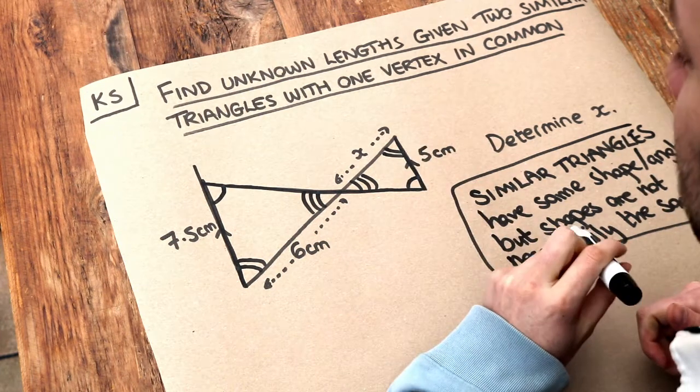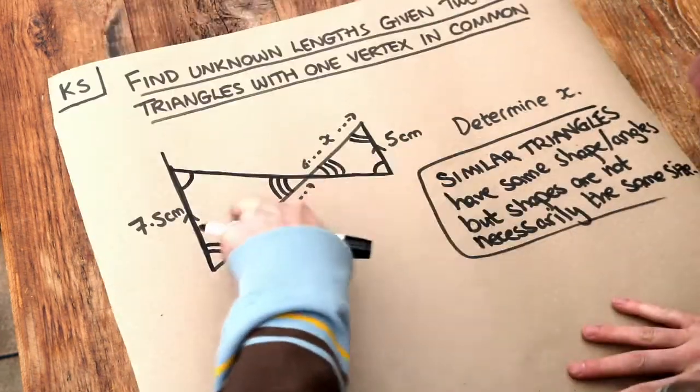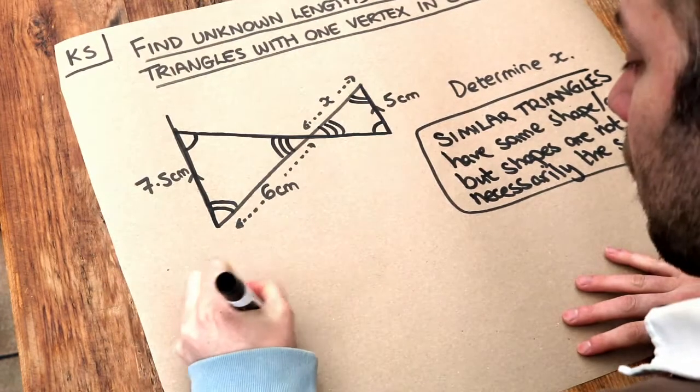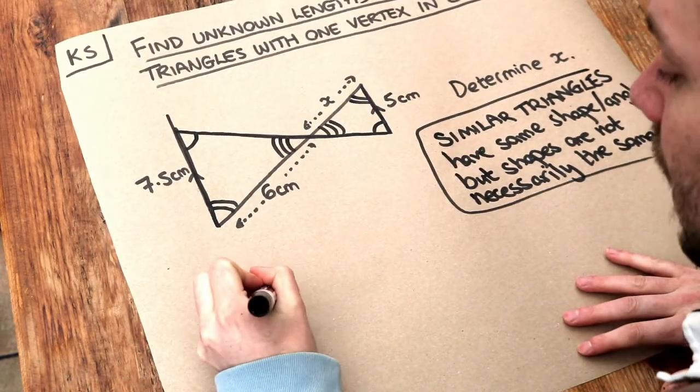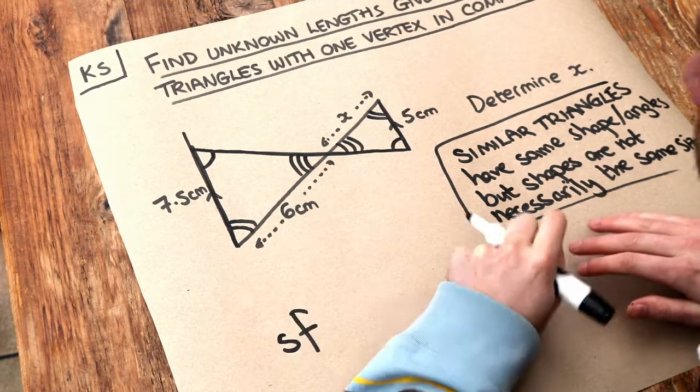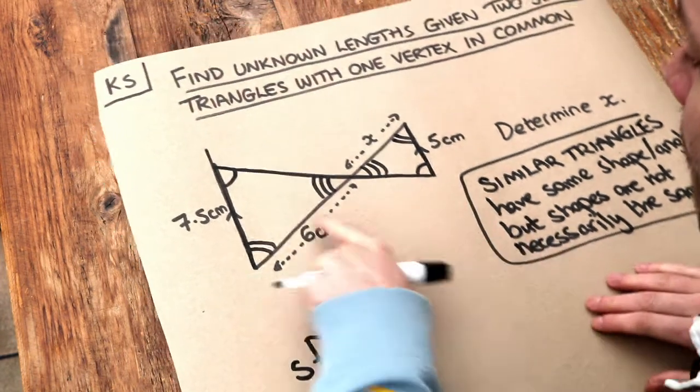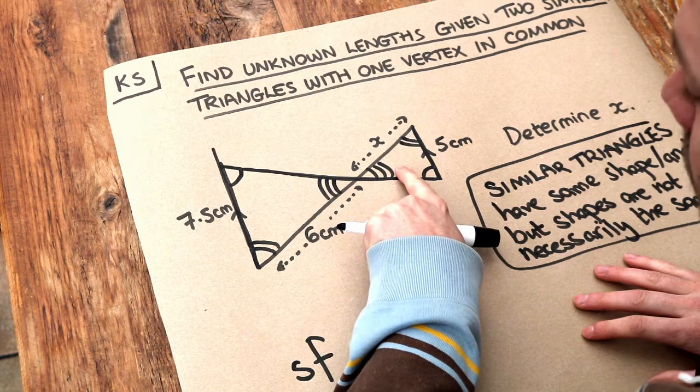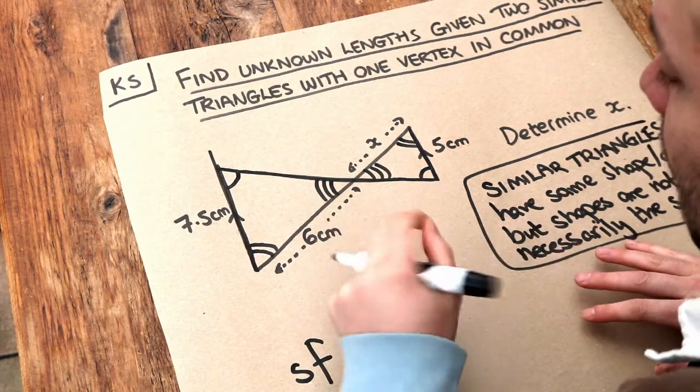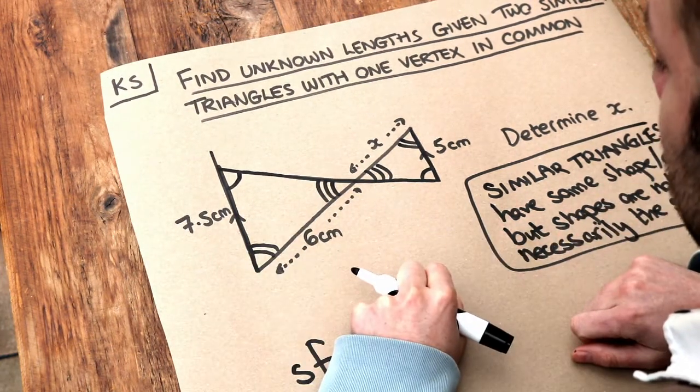Now remember when we have two similar triangles or two similar shapes we first identify the scale factor, the scale factor between the two triangles and what I mean by that is how many times bigger is that triangle than this triangle or the other way around and we can do that just by dividing two equivalent lengths.